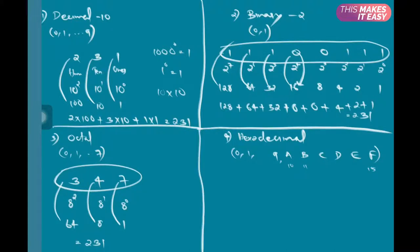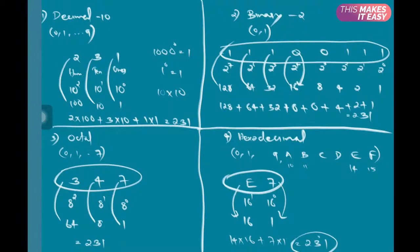Now coming to hexadecimal system. For example, I have a hexadecimal number E7. Here the base is 16: 16 power 0, 16 power 1. This is 1, this is 16. If I multiply E times 16 and 7 times 1—E in hexadecimal is 14—so 14 times 16 plus 7 times 1, we will get 231.